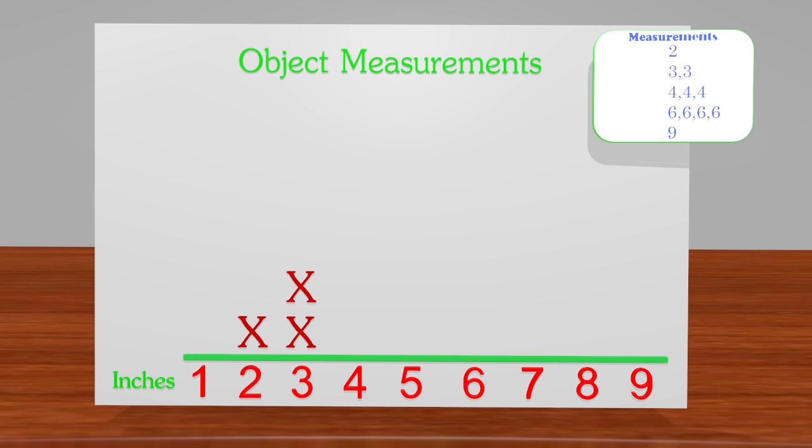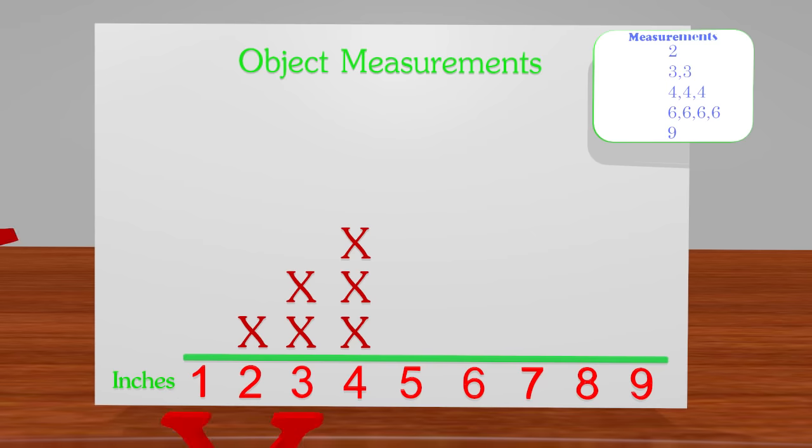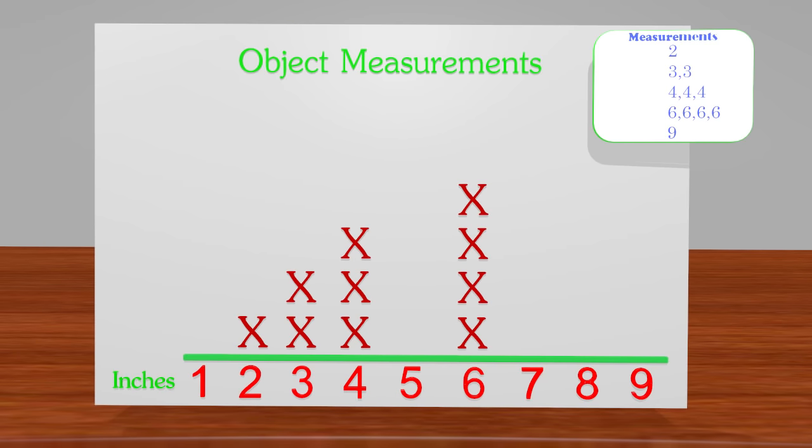There were three items that measured 4 inches, so we have three x's on top of each other. We had four items that measured 6 inches, so we put those x's down as well. We only had one object that measured 9 inches, so just one x.